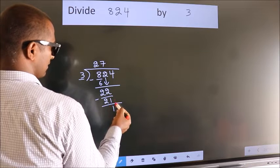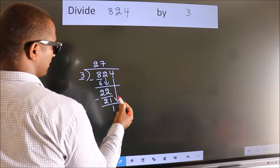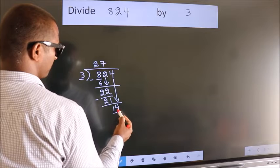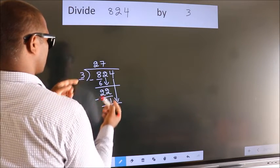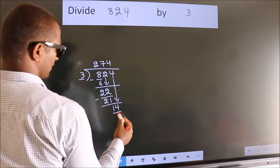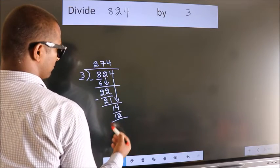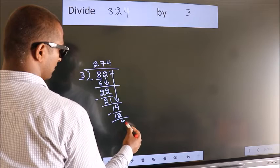After this, bring down the beside number. So bring 4 down. So 14. A number close to 14 in 3 table is 3 times 4, which is 12. Now we subtract. We get 2.